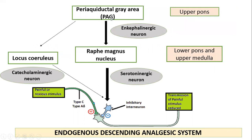The periaqueductal gray area is a part of the descending analgesic system which modulates pain transmission. The periaqueductal gray area neurons are enkephalinergic neurons, which release opioid peptides when stimulated. These neurons activate the serotonergic neurons present in the nucleus raphe magnus, located in the lower pons and upper medulla, which project down to influence the dorsal horn neurons of the spinal cord by activating the inhibitory interneuron, which releases enkephalins.